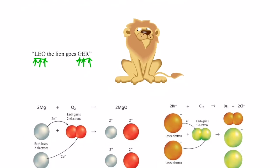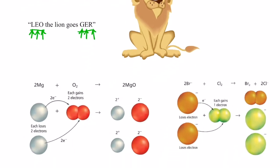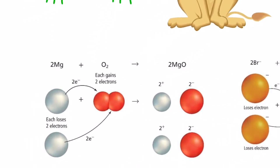So, beneath our picture of Leo the Lion, we have two reactions here. The first one involves magnesium atoms reacting with oxygen molecules to produce the compound magnesium oxide. Now, magnesium atoms are neutral. They have what we call an oxidation number of zero. They are neutral atoms. Likewise, oxygen molecules, the elemental form of oxygen, they also have an oxidation number of zero.